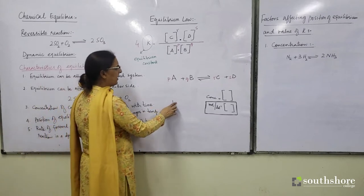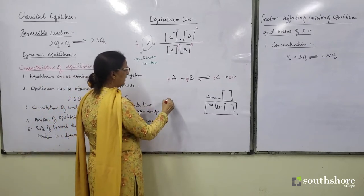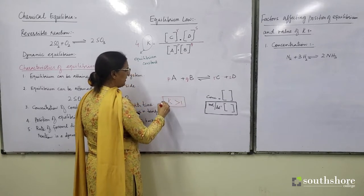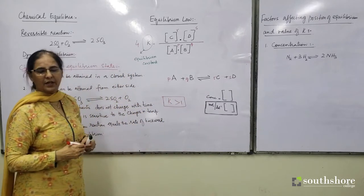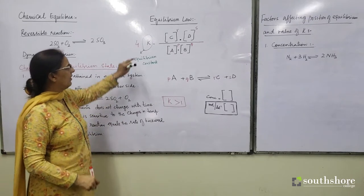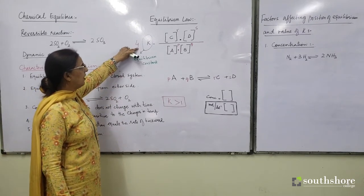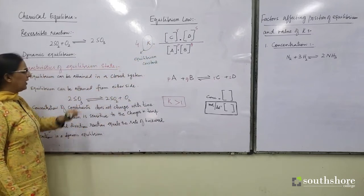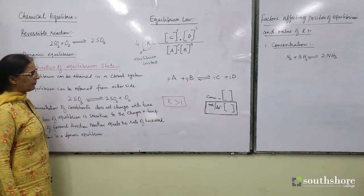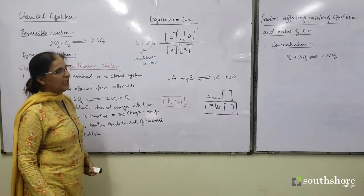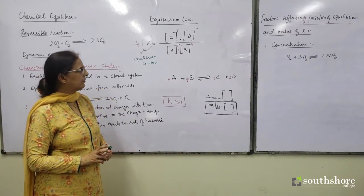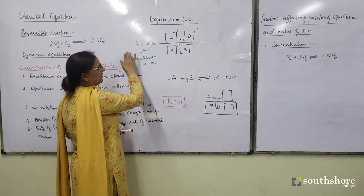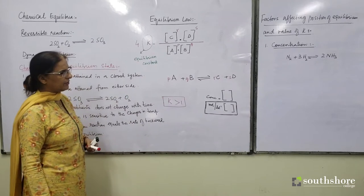But if the value of K is equal to 4, it is greater than 1. Whenever K is greater than 1, that means it is the extent of the forward direction reaction which is represented by this value — more of the product is formed. So we can use the value of K to measure the extent of the forward direction reaction. A higher value or greater value than 1 means forward direction reaction is taking place to a greater extent.